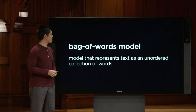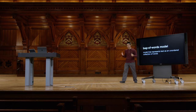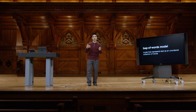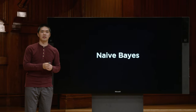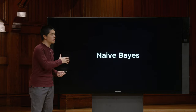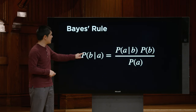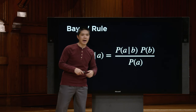We'll use the bag of words model, which represents text as an unordered collection of words — we don't worry about word order. This lets us build a naive Bayes classifier. Bayes' rule states that the probability of B given A equals the probability of A given B times the probability of B, divided by the probability of A. We're interested in the probability that a message has positive sentiment and the probability it has negative sentiment.